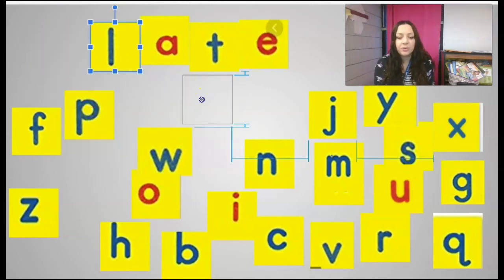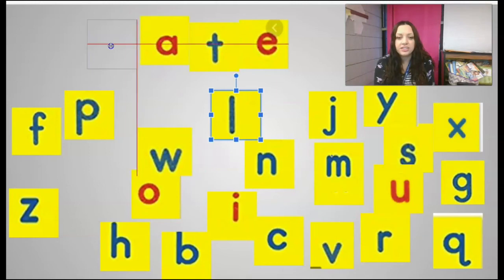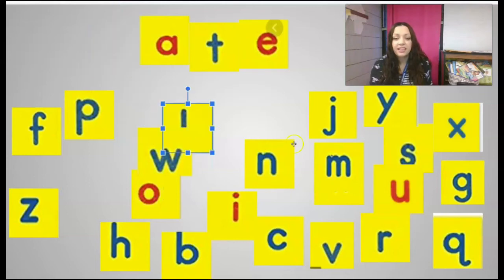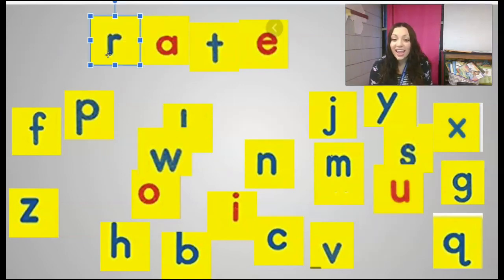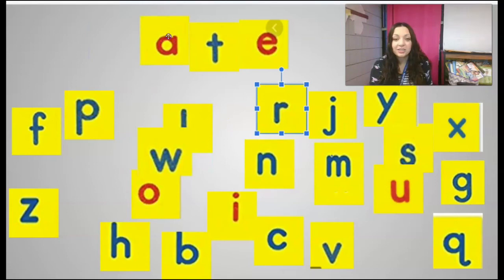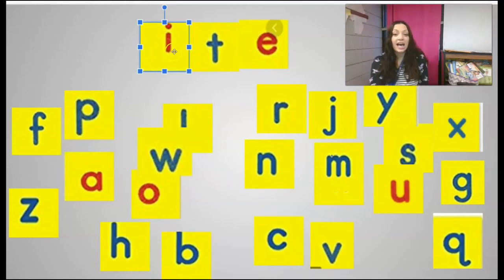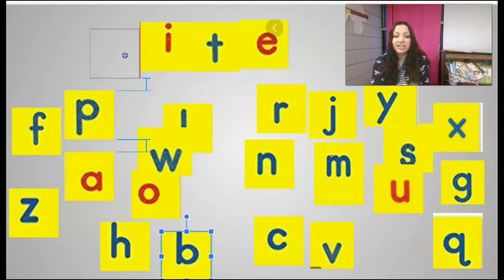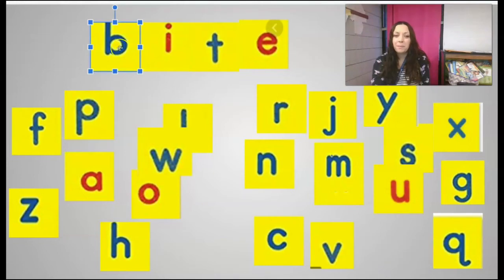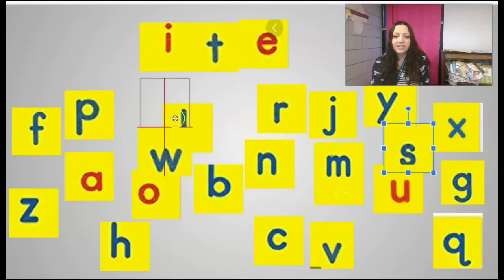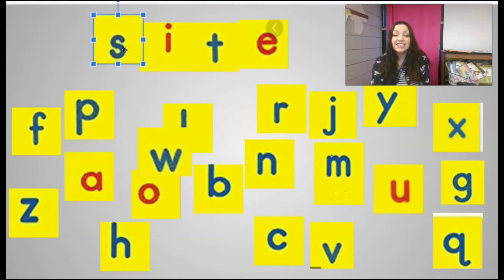What if I change the blend in front to just an L? What do I have now? 'Late'. Very good. What if I change it to an R in front? 'Rate'. Very good. Now I'm going to take the A off and add an I. This part is still I-consonant-E, so it says 'ite' — tight. What if I change the beginning sound to a B? 'Bite'. Then change the beginning sound to an S? 'Sight'. Good job.